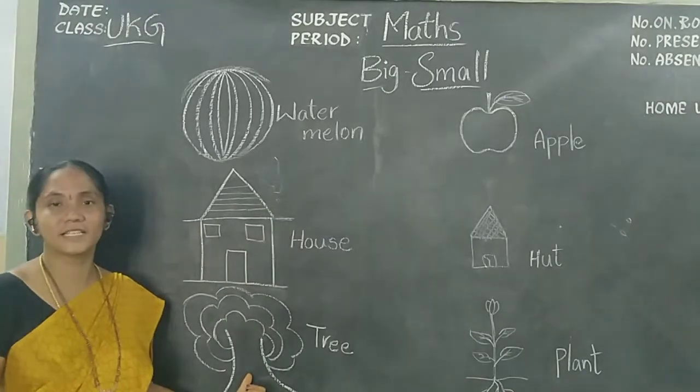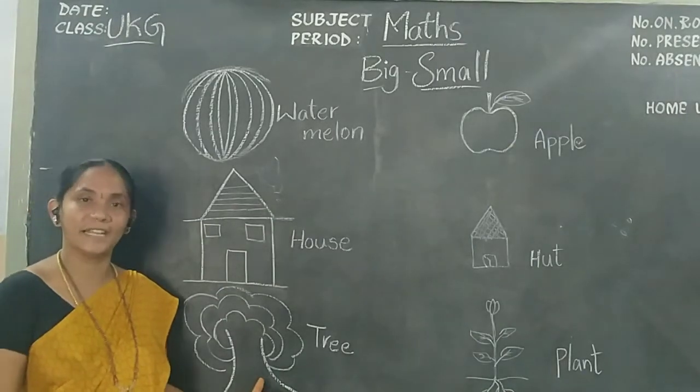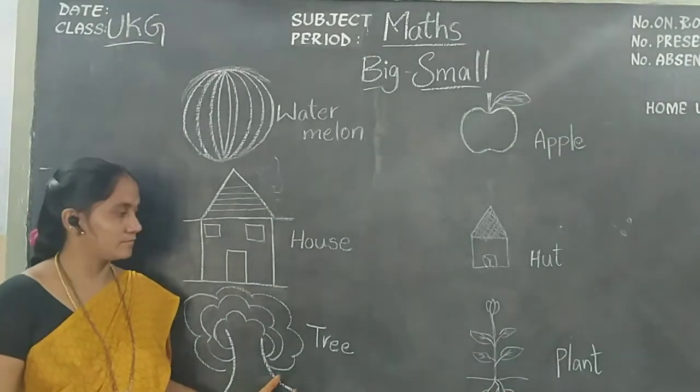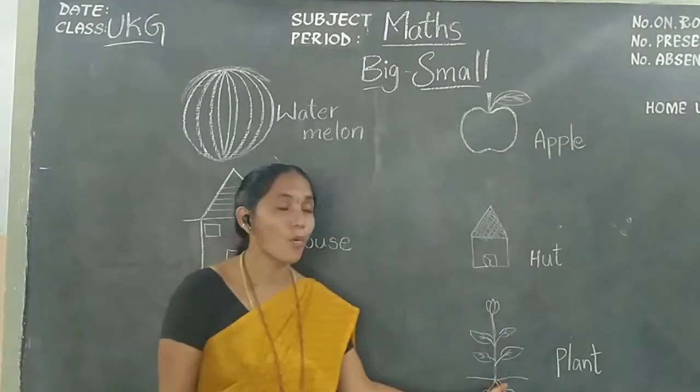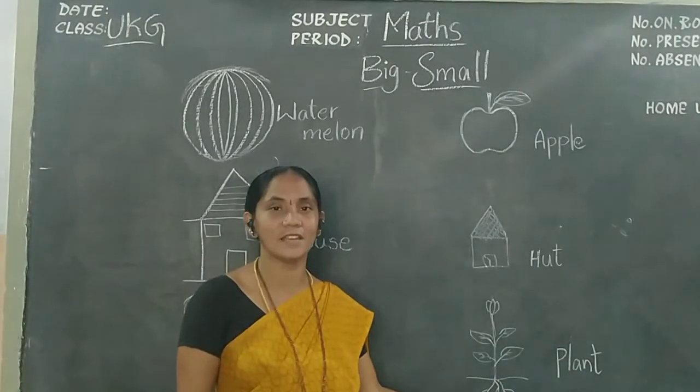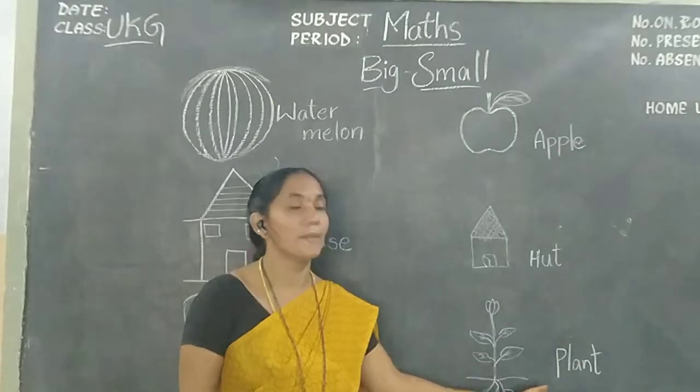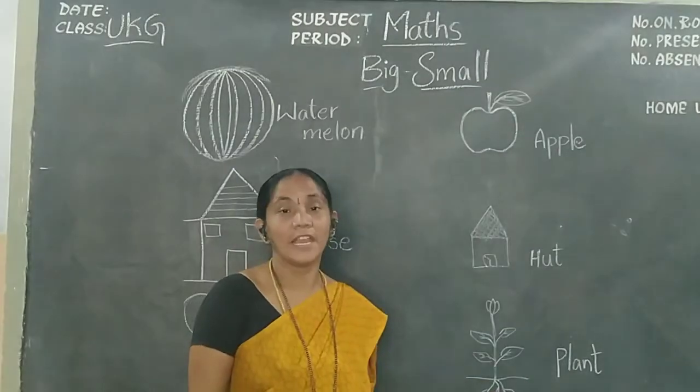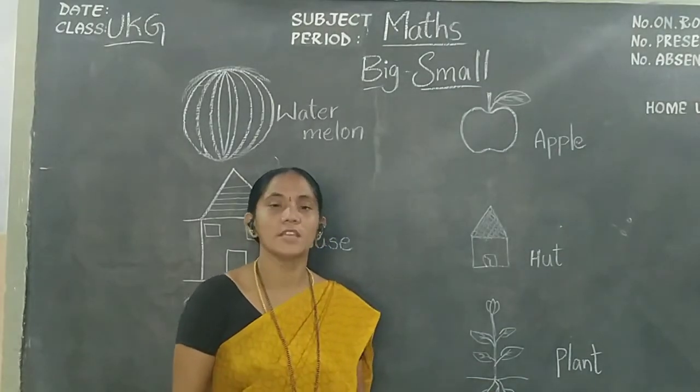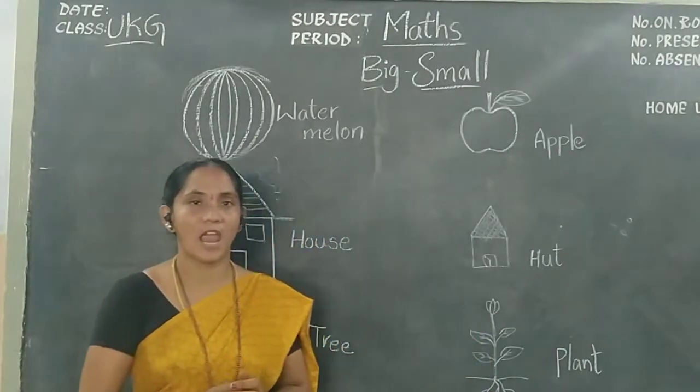What is this? This is a tree. What is this, children? This is a plant. It looks like very small plants.